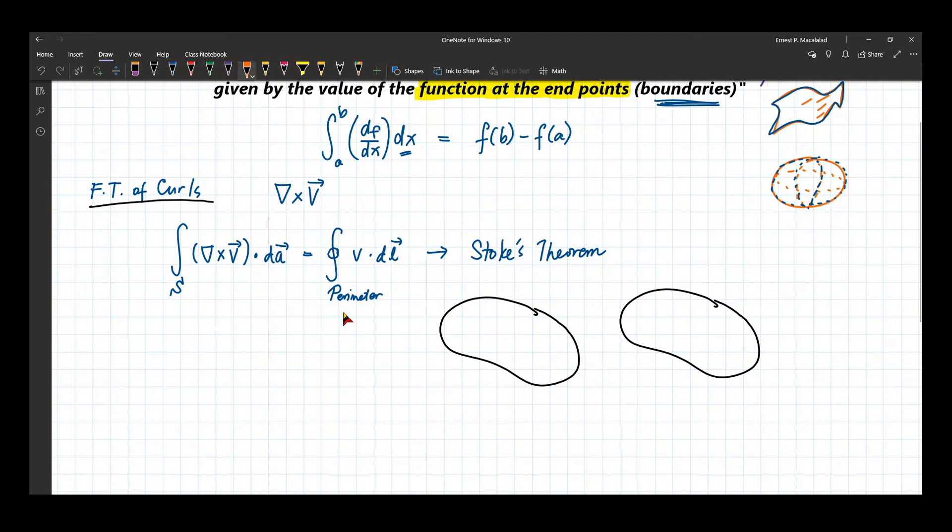So let's say we have, remember this is a curl, right? So that means generally the vector is basically rotating. So let's say that rotation happens like this. At certain regions here, we have this vector field inside this surface.